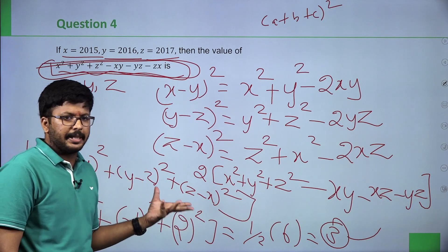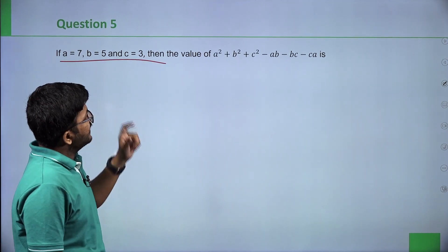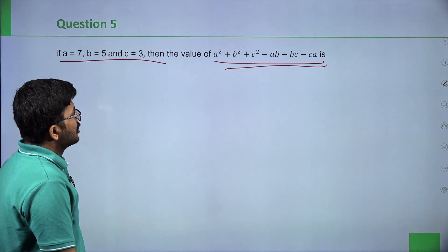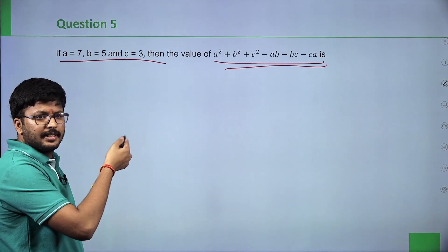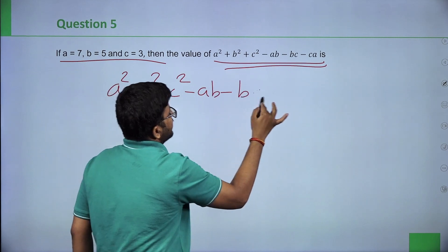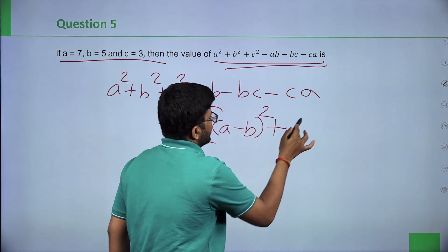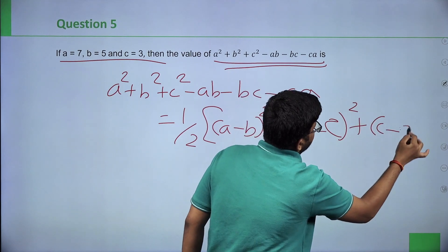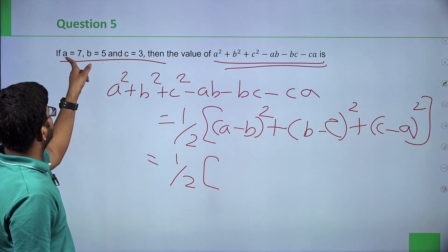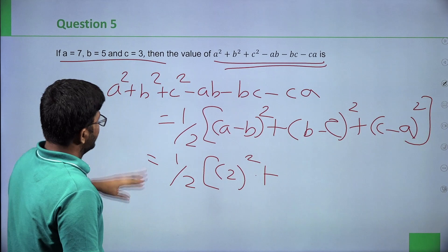Next question: if a equals 7, b equals 5, c equals 3, find the value of a square plus b square plus c square minus ab minus bc minus ca. Using the same formula: one half into (a minus b whole square plus b minus c whole square plus c minus a whole square). a minus b = 7 minus 5 = 2, so 2 squared = 4. b minus c = 5 minus 3 = 2, so 2 squared = 4.